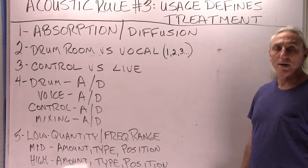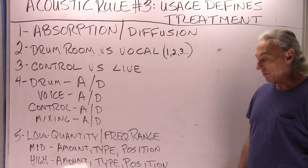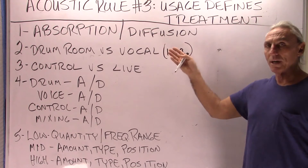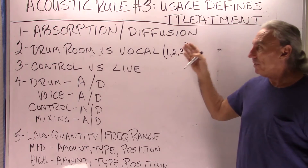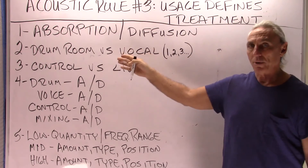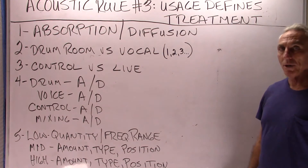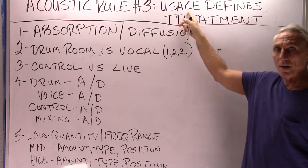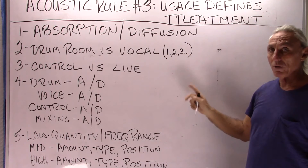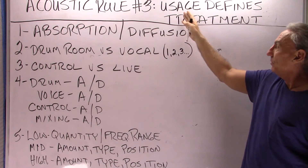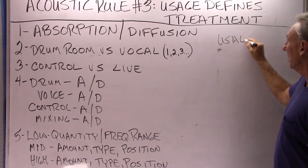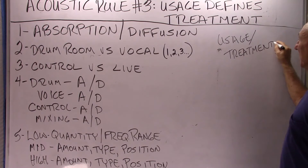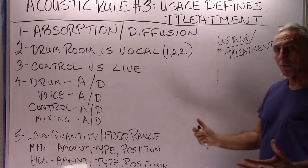One could argue that electronic signal processing is another treatment technology, but we won't discuss that in this video — we'll save it for another time. With those two technologies, we have to remember that it's all about the use. A drum room is going to be drastically different than a voice room. A vocal room for one singer has drastically different usage requirements and treatment technology than two, three, four, or ten singers. You always have to keep this paradigm in mind: what are we doing in the room, how are we going to treat it to complement the usage, and what are we trying to get out of it?